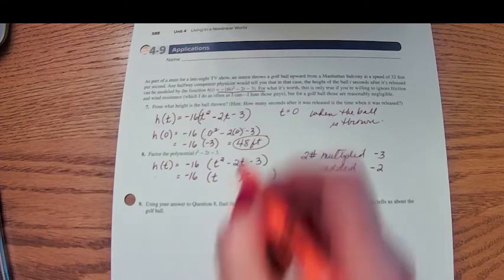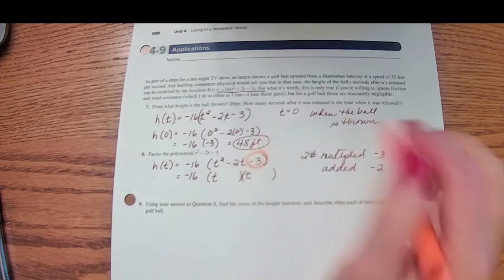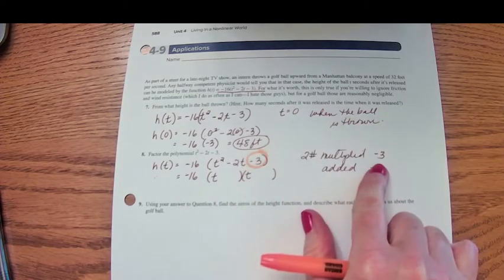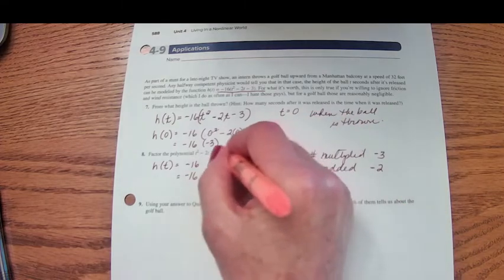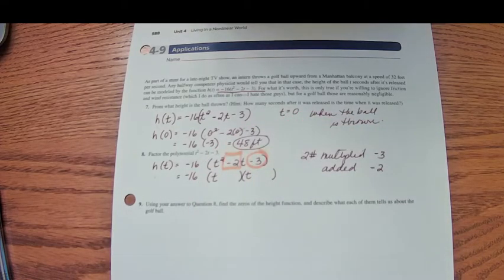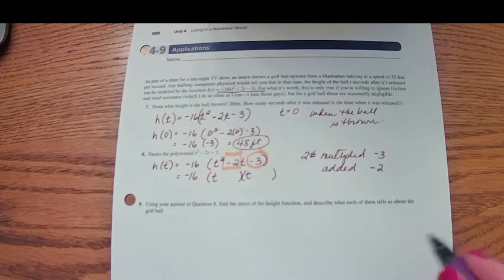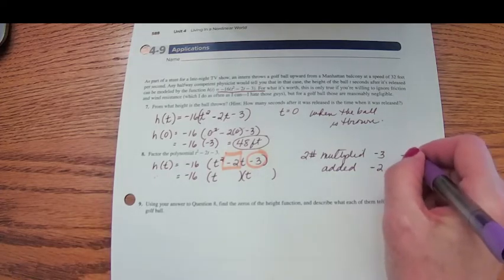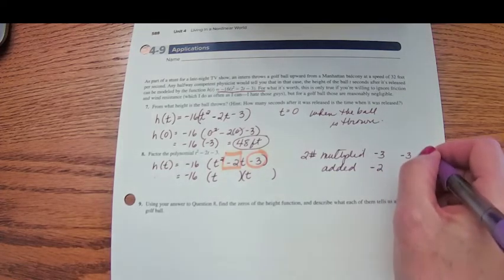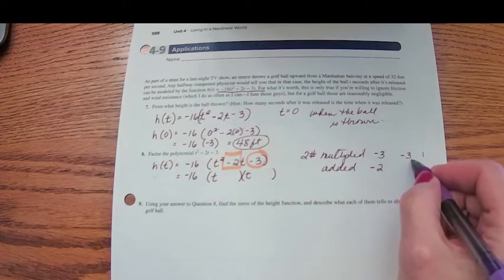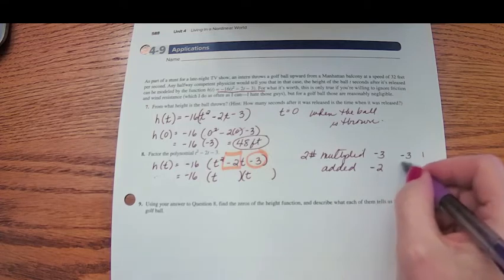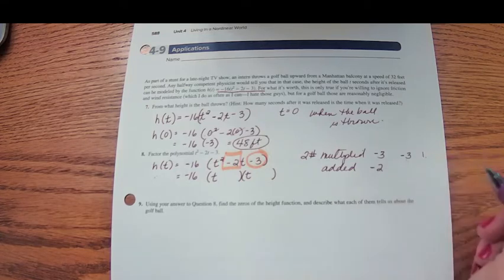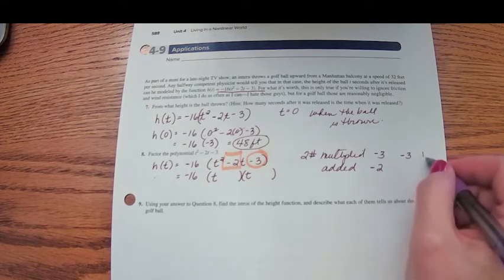Two numbers multiplied that give you negative 3, but when they're added they give you negative 2. And so that's going to be a negative 3 and a positive 1, because when you multiply negative 3 times 1 you get negative 3, but when you add negative 3 plus 1 you get negative 2.